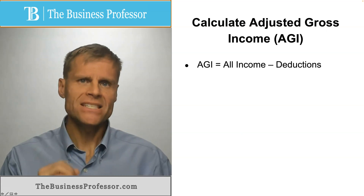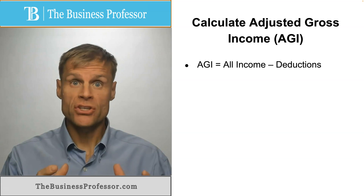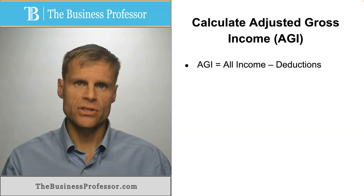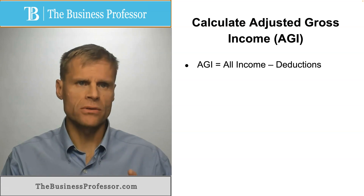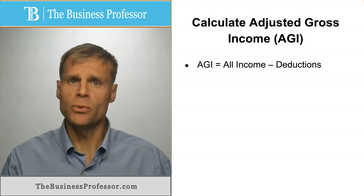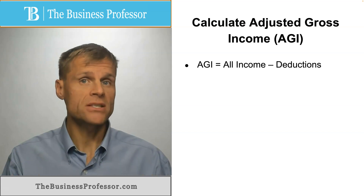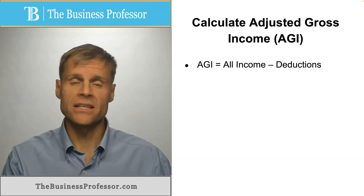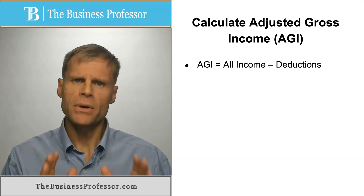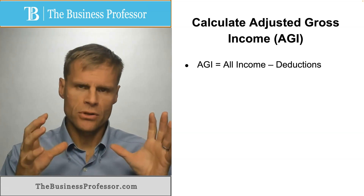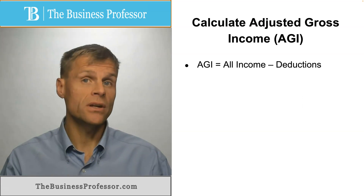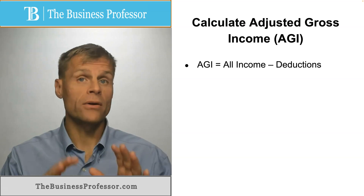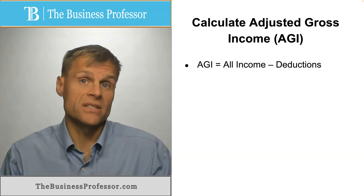AGI is a combination of all your applicable income sources minus deductions. I have to caution you when I say all applicable income sources, because there are many sources of income that are exempt from inclusion in this group. You collect all of your income sources, subtract your deductions, and you end up with AGI. We'll also talk about the various types of deductions that are available.